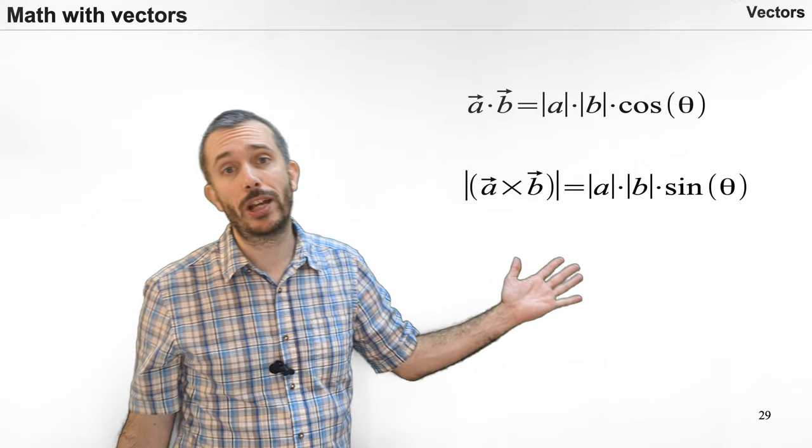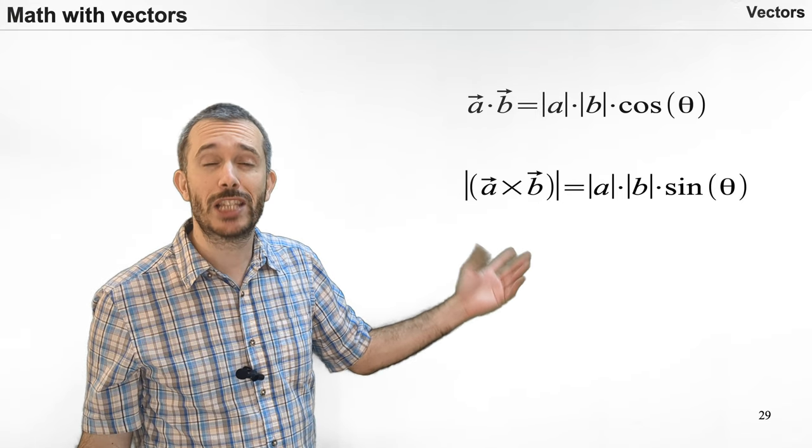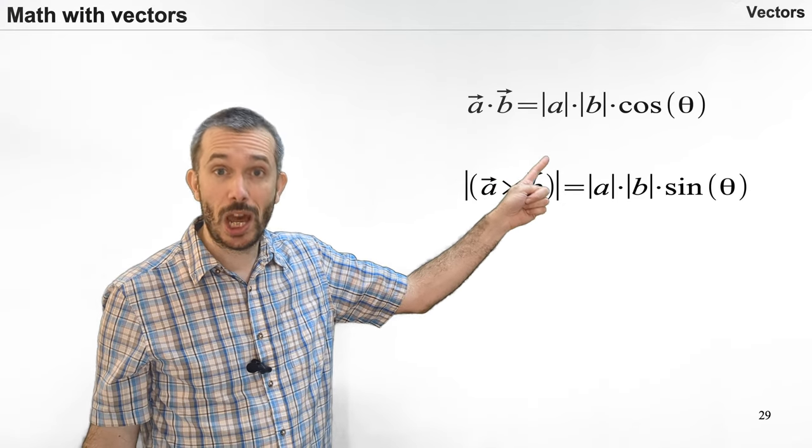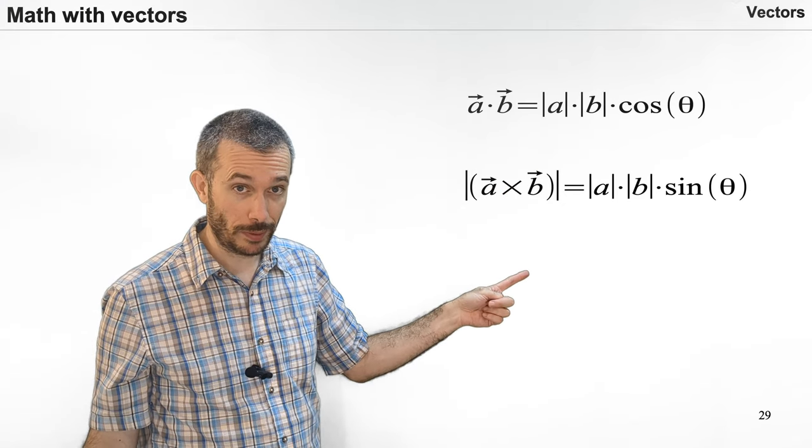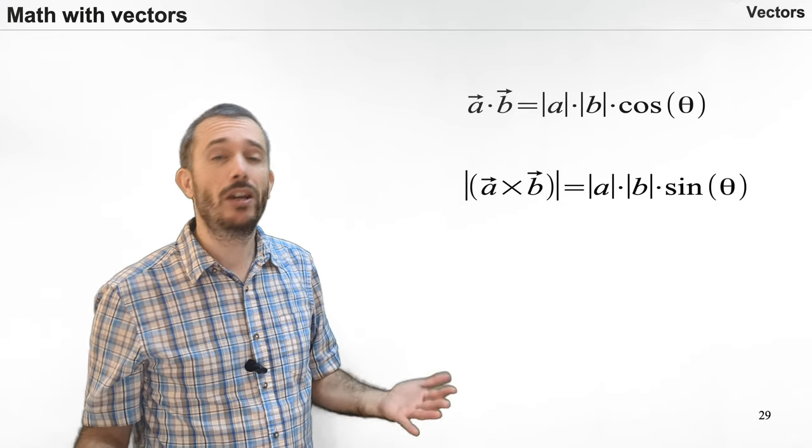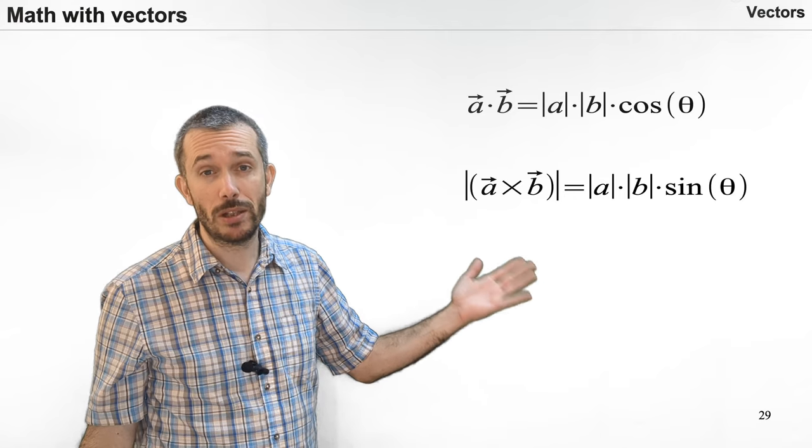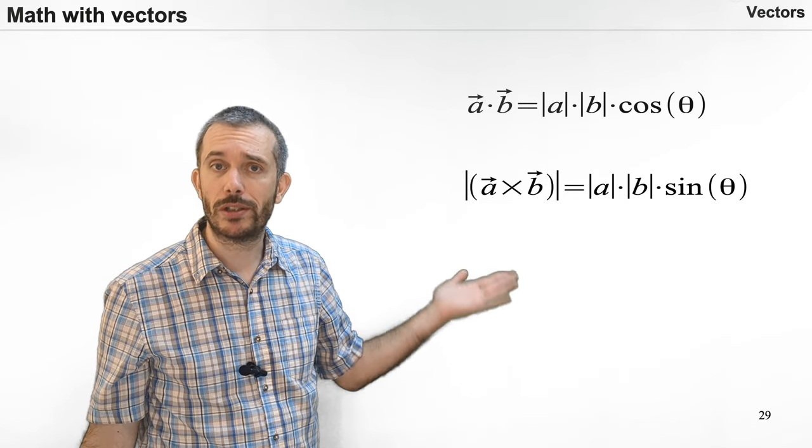For multiplication, it actually gets even more complicated as we have two different operations, the dot product and the cross product. However, at the beginning of the physics courses where you learn about vectors, you usually don't immediately need to multiply them so we can leave the explanation for those two operations for later.